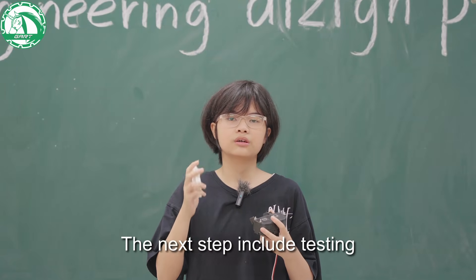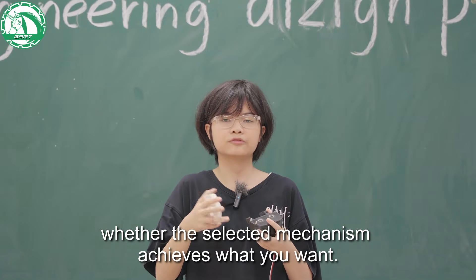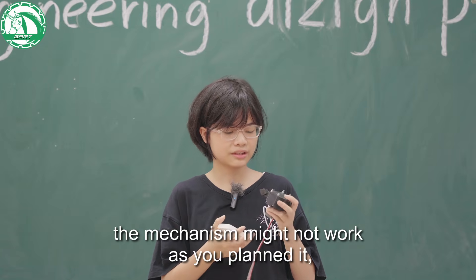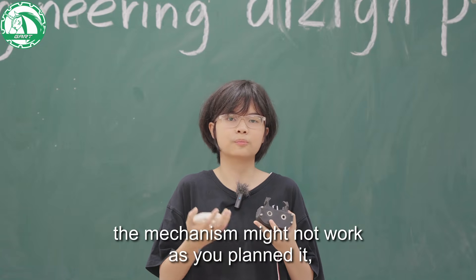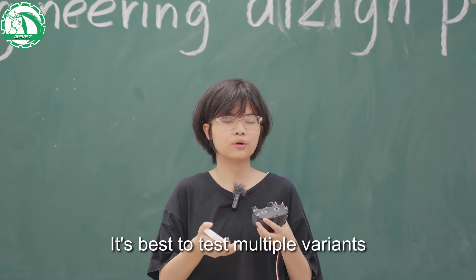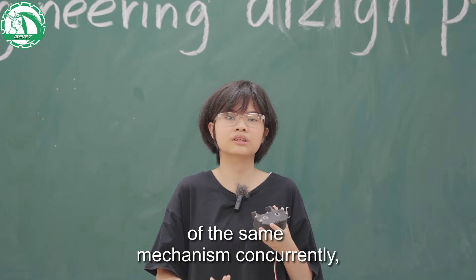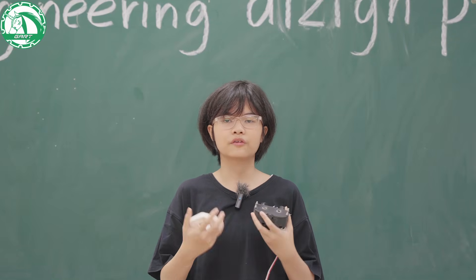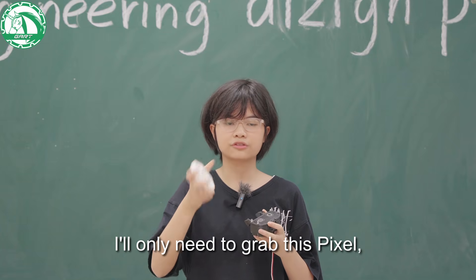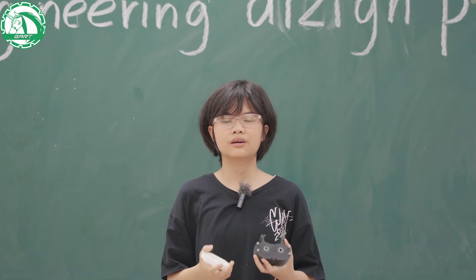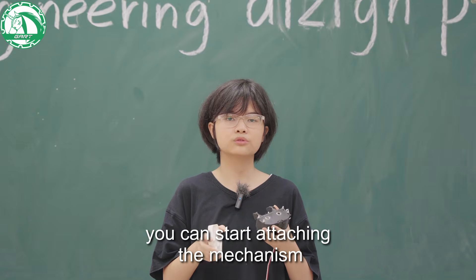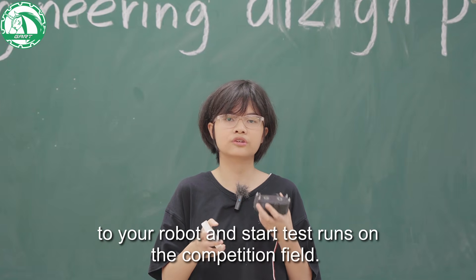The next step includes testing whether the mechanism achieves what you want. Be prepared that the mechanism might not work as you planned or calculated. It's best to test multiple variants of the same mechanism concurrently, and simple tests are way better than complex ones. For example, if I want to test this claw, I only need to grab this pixel and spin this circle. If you're satisfied with the results, you can start attaching the mechanism to your robot and start test runs on the competition field.